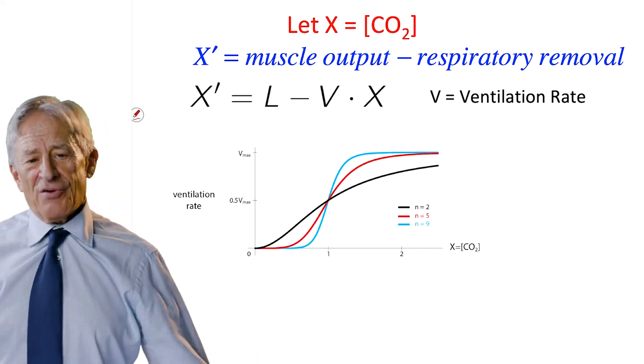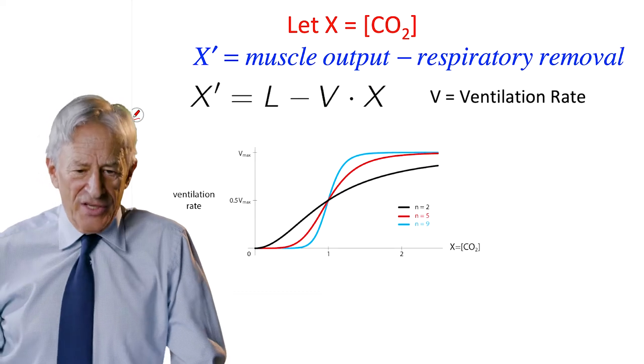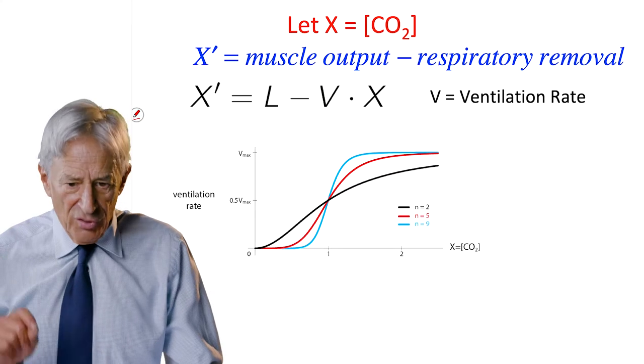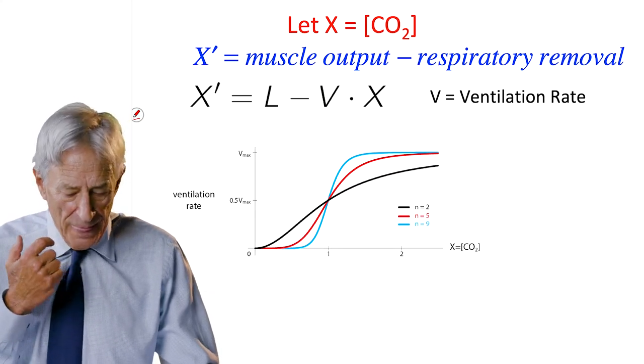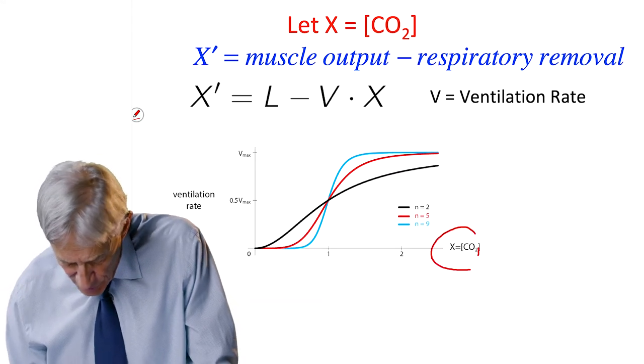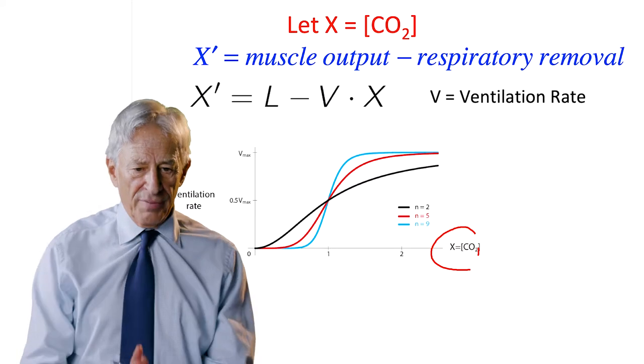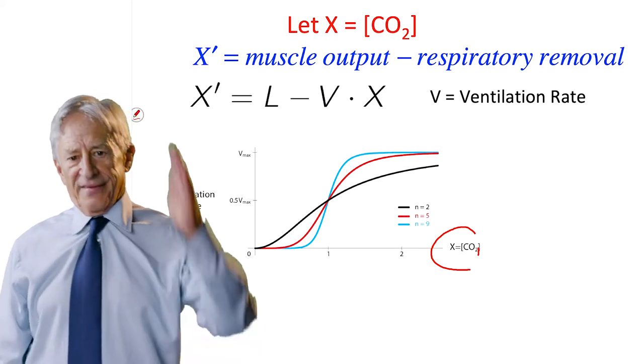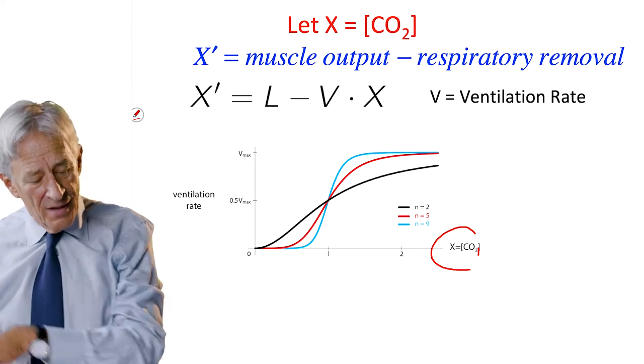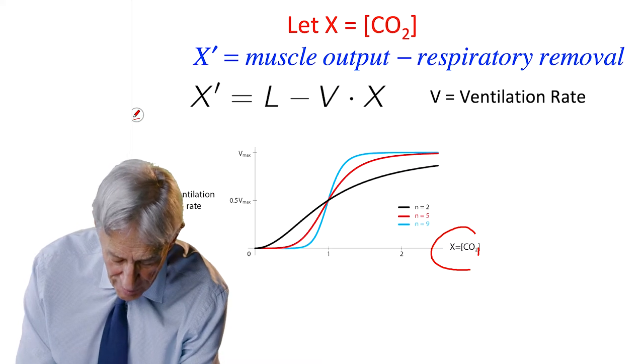In fact, sigmoids are often called Hill functions in physiology, in honor of Hill who first discovered this in the control of ventilation by CO2. And so what you see is that as CO2 goes up, the ventilation rate goes up. It obviously can't go up infinitely. It has to saturate. And therefore, it has to have the form of a sigmoid.